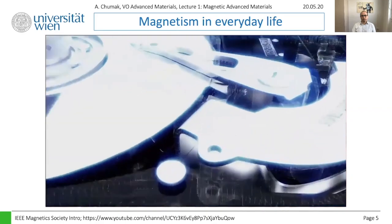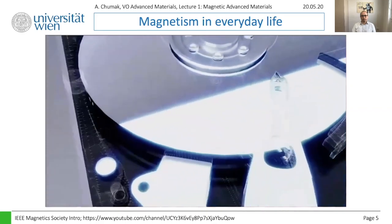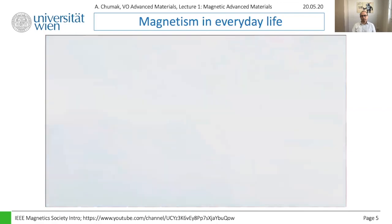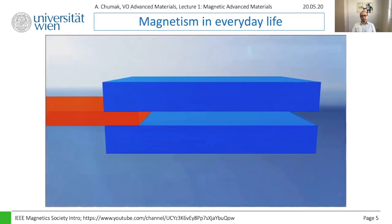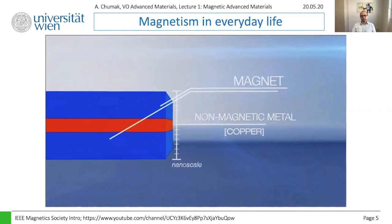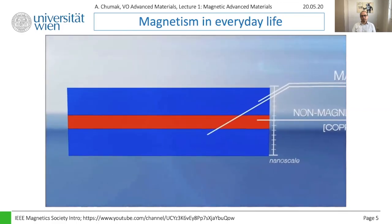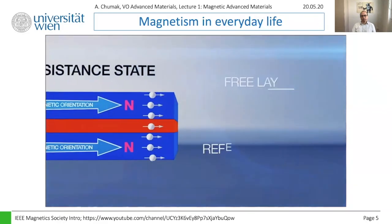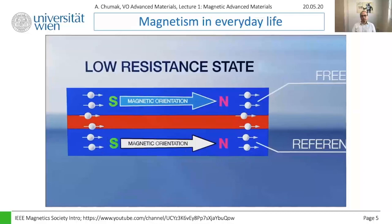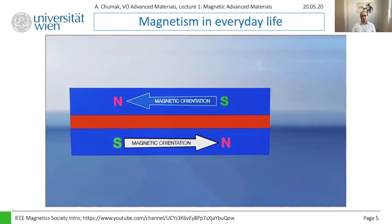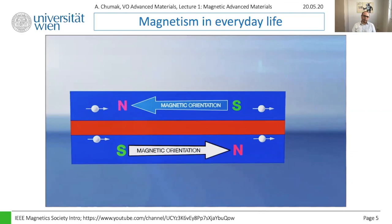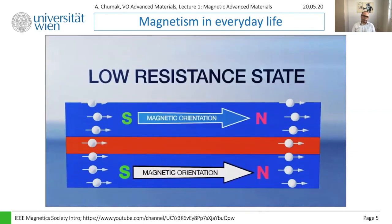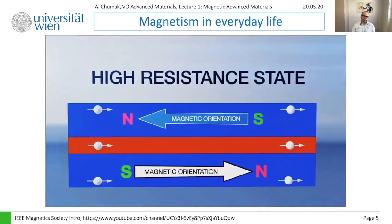One discovery that has revolutionized modern sensors and digital data storage is the giant magnetoresistance (GMR) effect. Imagine two permanent magnets separated by a non-magnetic metal such as copper. By fixing the magnetization of the lower layer and switching the orientation of the top layer, there is a giant change in resistivity across the layers. This allows detection of even small magnetic fields, making modern magnetic sensors highly sensitive.